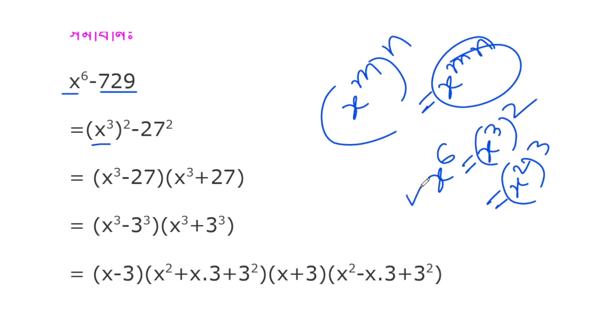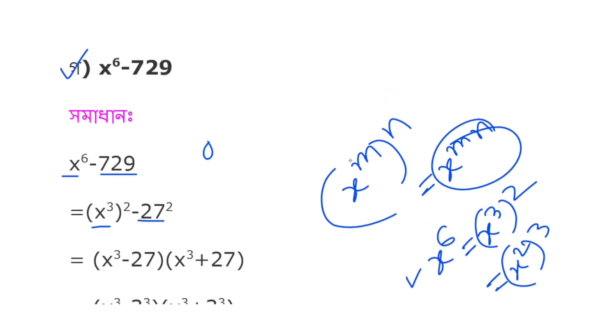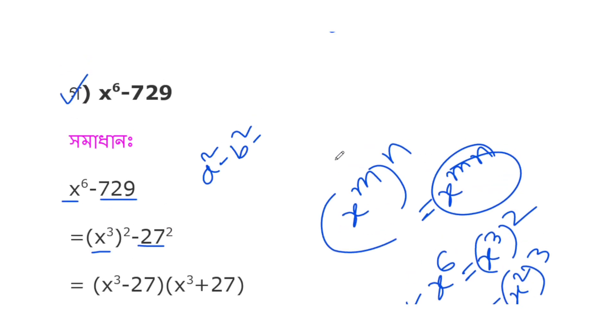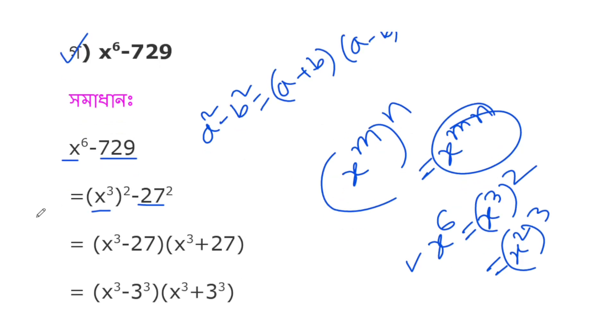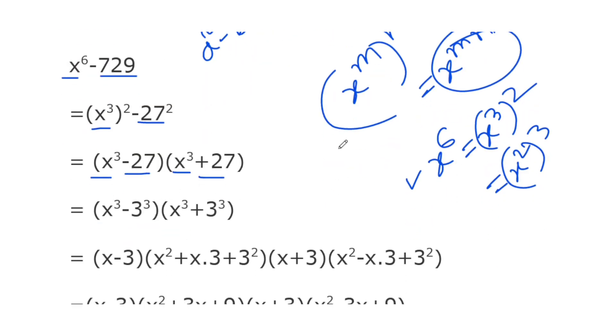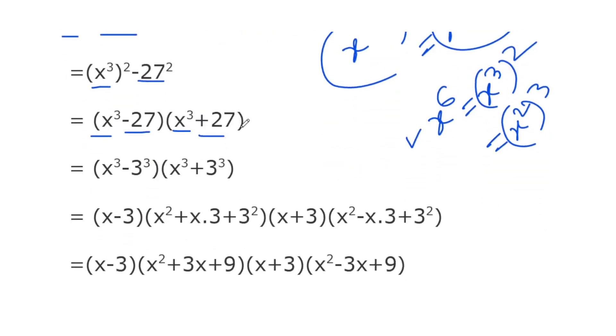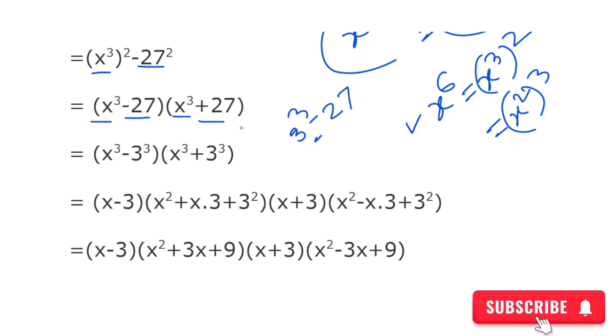Now both factors are differences or sums of cubes: (x³-3³)(x³+3³). I can apply the cube formulas to each factor.